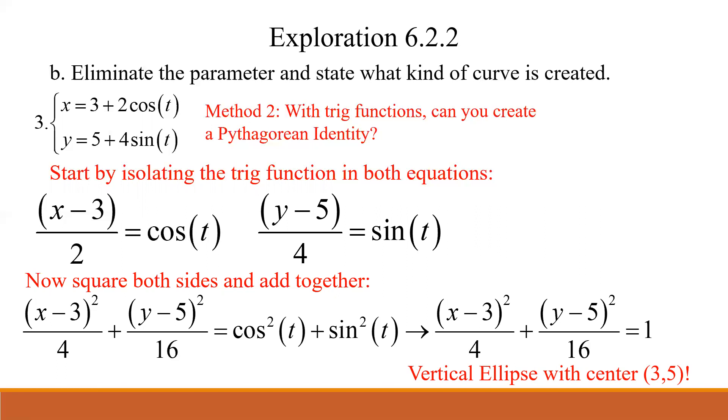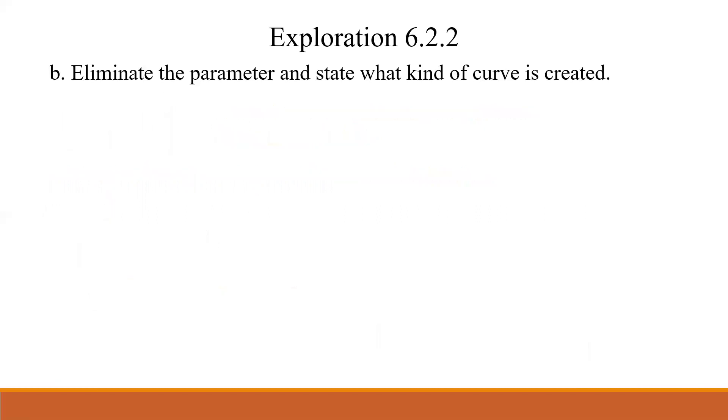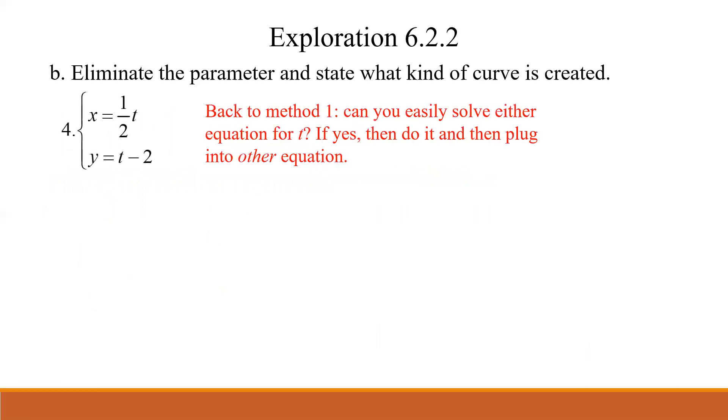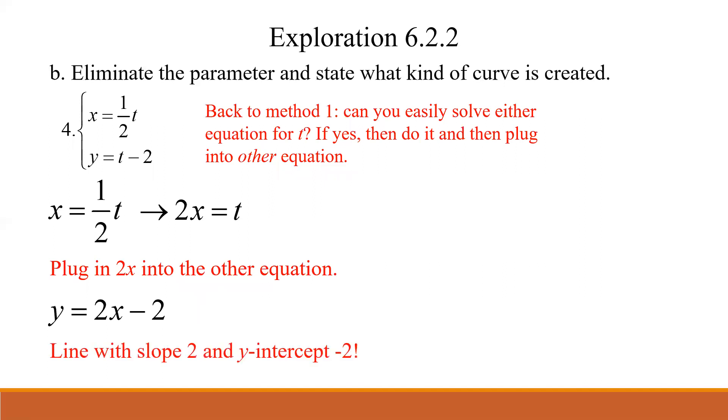And then the last one, number four. Again, we're going back to a linear function. So we're back to method one, pick one of them that you want to solve for t and then plug it in. So again, I'm going to pick the top one, x equals one half t, multiply both sides by two. So we just have 2x equals t, plug that in. Well, that's just a one step. There's nothing even to clean up. Y equals 2x minus two. And that is a line, the slope two and the y intercept at negative two, which is what we saw on that graph as well.